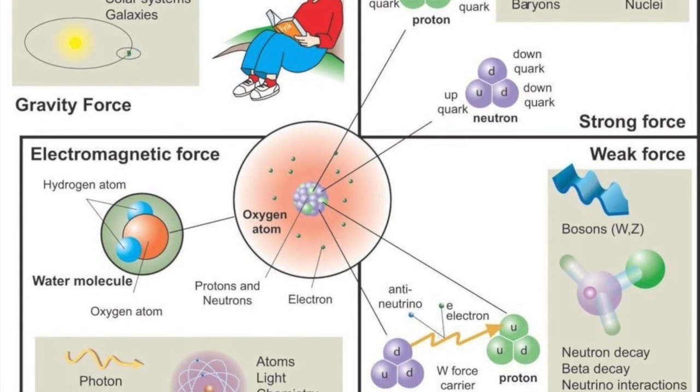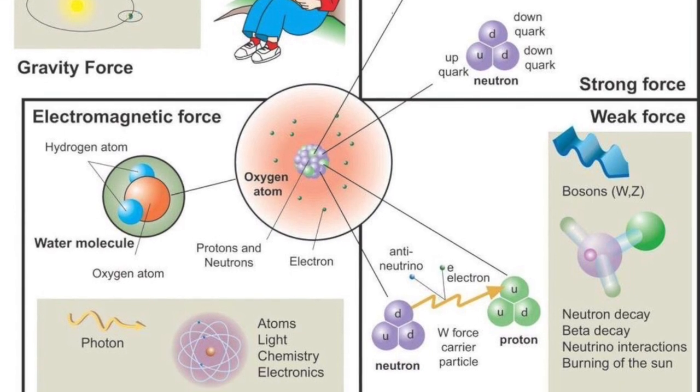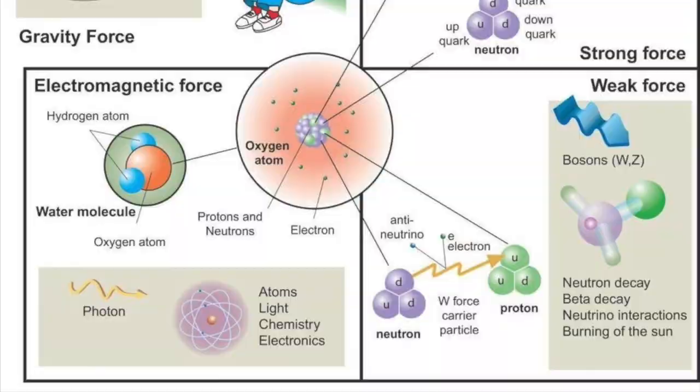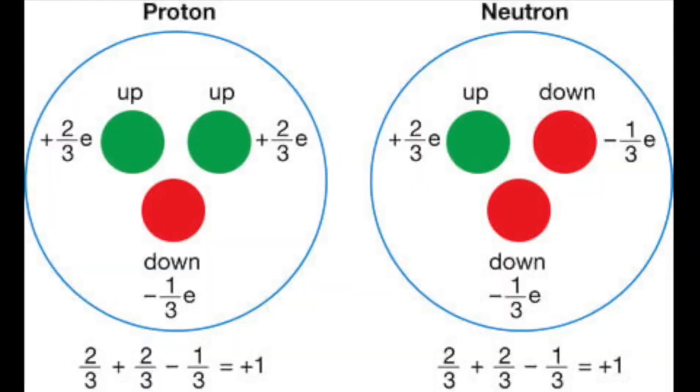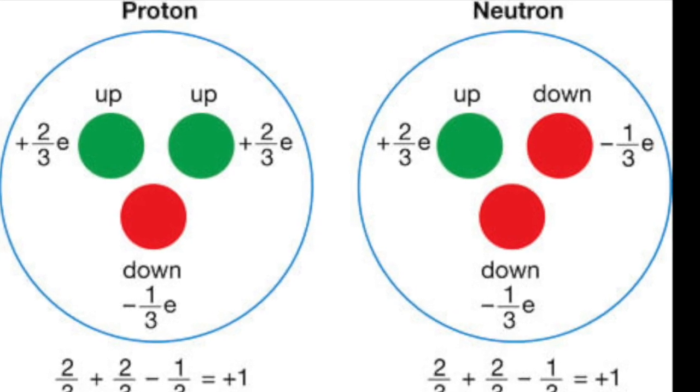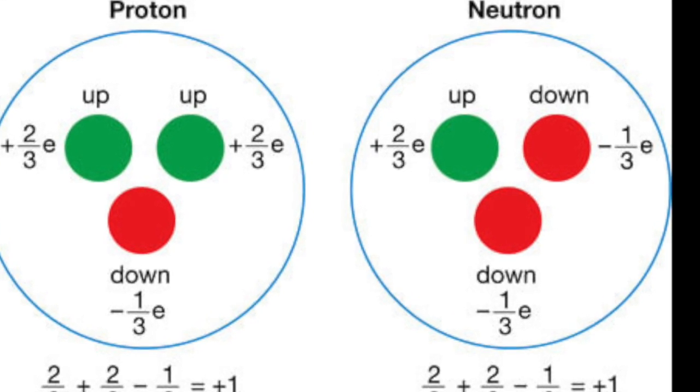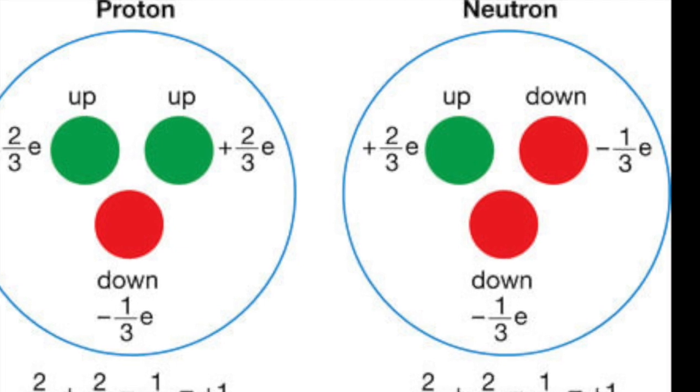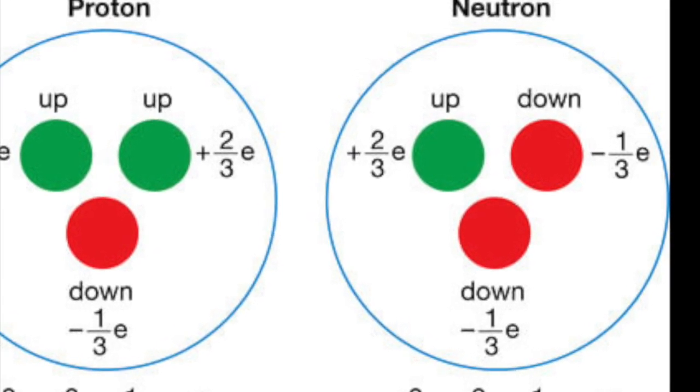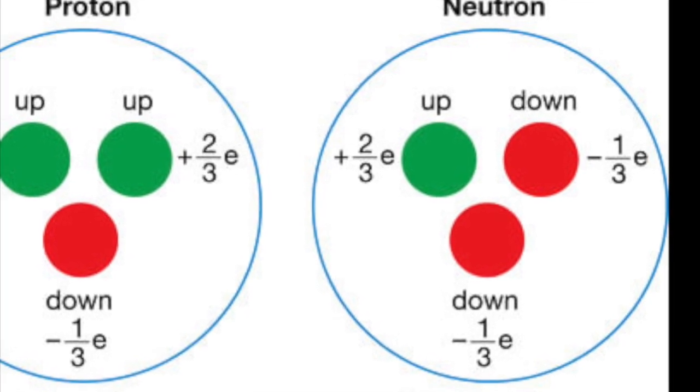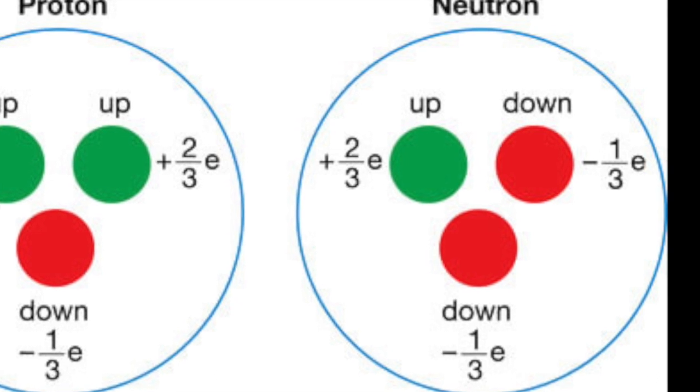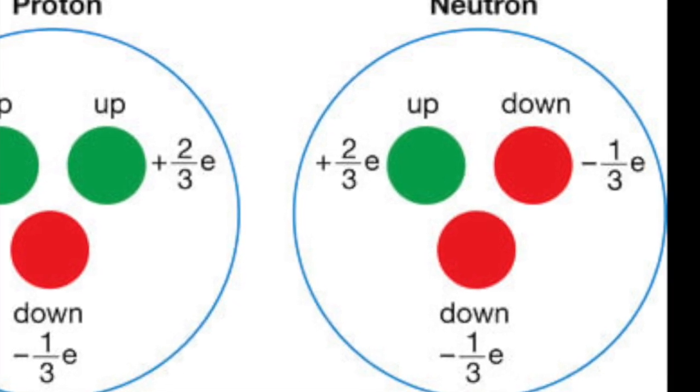Everyday matter is of the first generation, so we can concentrate our investigation on up and down quarks. If a proton is made of three quarks, how does that work? Take the up quark to have charge plus 2/3e and the down quark to have charge minus 1/3e. So a proton (up, up, down) will have total electric charge 1e. Similarly, a neutron (up, down, down) has zero electric charge.